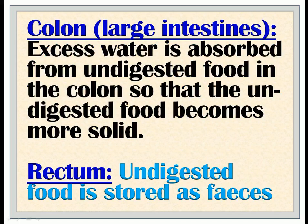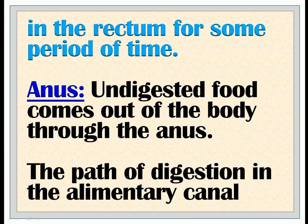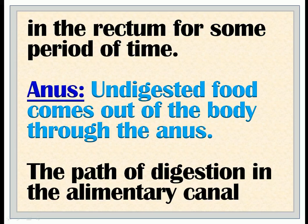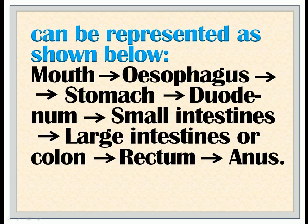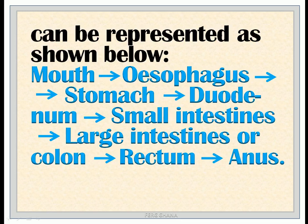Rectum: Undigested food is stored as feces in the rectum for some period of time. Anus: Undigested food comes out of the body through the anus. The path of digestion in the alimentary canal can be represented as: mouth → esophagus → stomach → duodenum → small intestines → large intestines (colon) → rectum → anus.